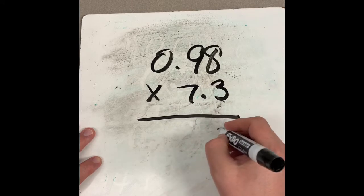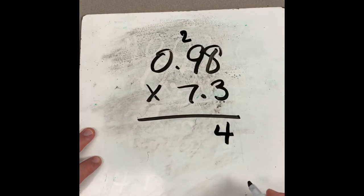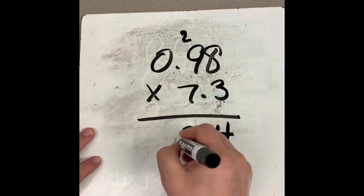So three times eight will be twenty-four. We'll drop our four down and we'll carry our two up. Three times nine is, of course, twenty-seven, and two more makes twenty-nine.